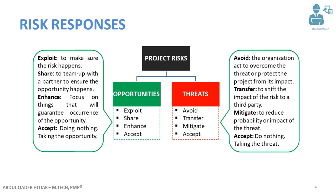Mitigate means to reduce the probability or impact of the negative risk. If you forecast a risk in the future, you take measures to reduce its probability so it doesn't happen, and to reduce its impact so it doesn't affect your project significantly. The last one is accept: there are some cases where you cannot do anything about the risk, so you just go into it and accept it. That's called accepting the risk.